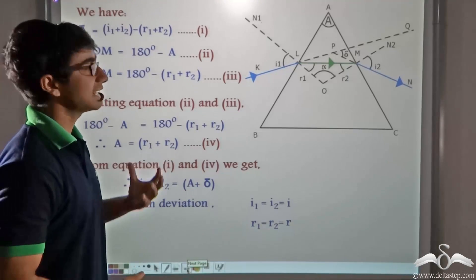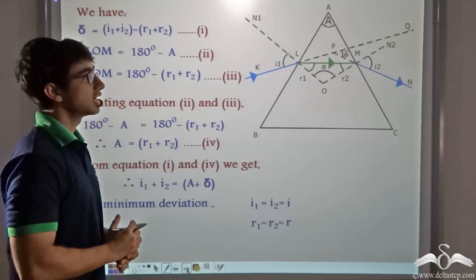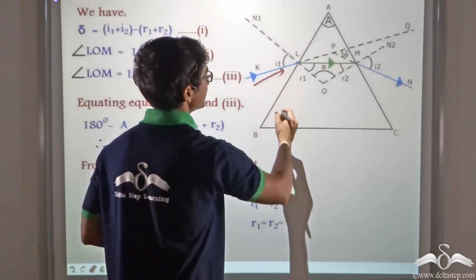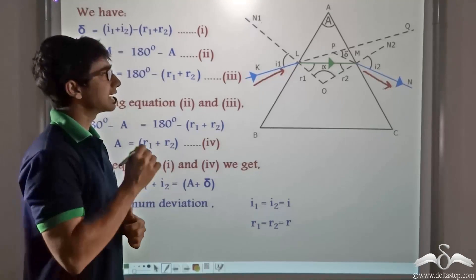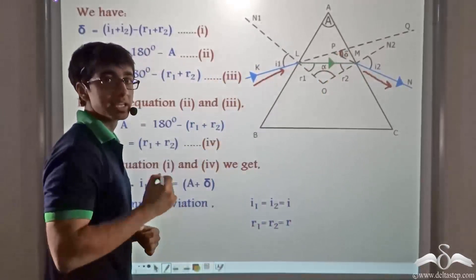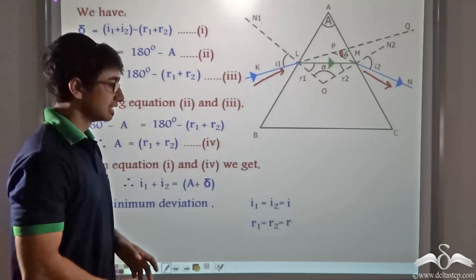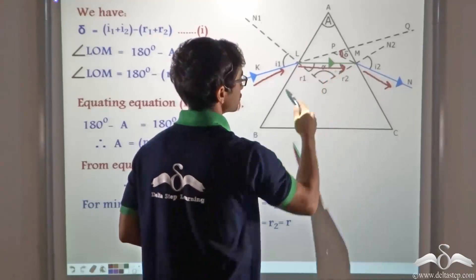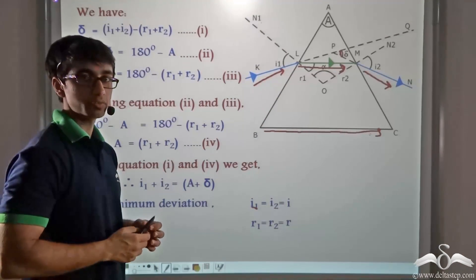Now we must consider minimum deviation. This experiment is usually performed with a spectrometer, where a prism is used to find out what deviation a ray of light undergoes. Different angles of incidence are considered, and it is observed that at one particular angle of incidence, the angle of deviation is the least or minimum. At minimum deviation, the ray inside the prism becomes parallel to the base of the prism.